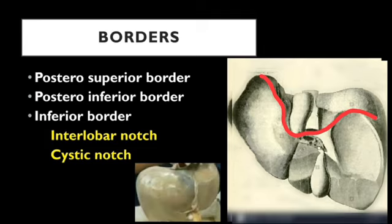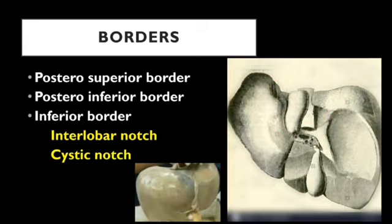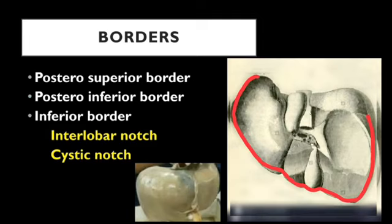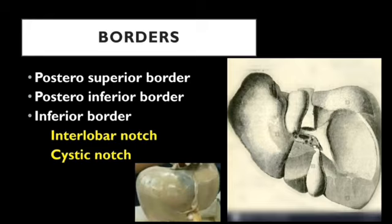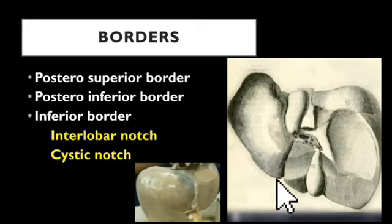The inferior border is a well-defined sharp border extending from the right triangular ligament on the right to the left triangular ligament on the left, separating the inferior surface from the anterior and right lateral surfaces. This border presents two notches: on the left side, the interlobar notch, which lodges the ligamentum teres; and on the right side, the cystic notch, which lodges the fundus of the gallbladder.